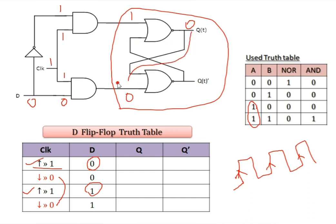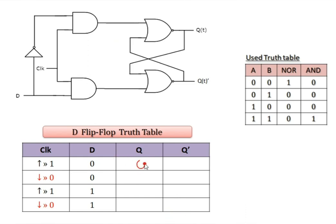Zero and zero to the NOR gate gives one. So Q=0 and Q̄=1 for the first case where D=0. For the second case: negative clock pulse (0) is applied. Zero and zero to AND gate gives zero; one and zero gives zero. This gives SR latch with inputs zero-zero, which is the no-change condition, so the output remains the same as the previous state.